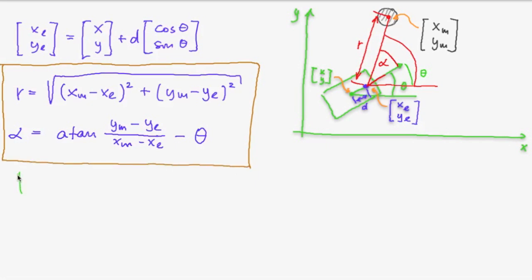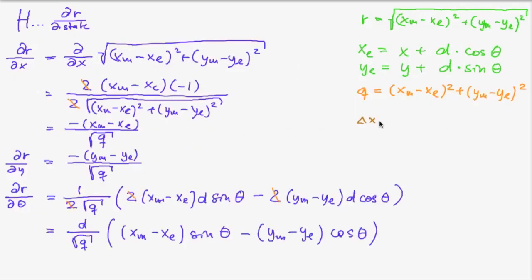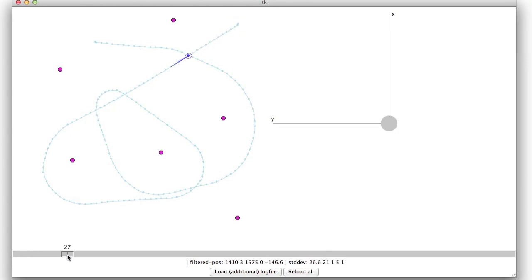Now the second step in the Kalman filter is the correction or measurement and we also have to compute the derivative of the measurement equation with respect to the state. After we implement this second step we finally obtain the Kalman filter trajectory, prediction and correction where the error is not unbounded anymore.